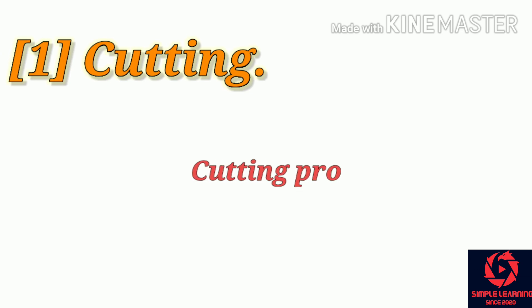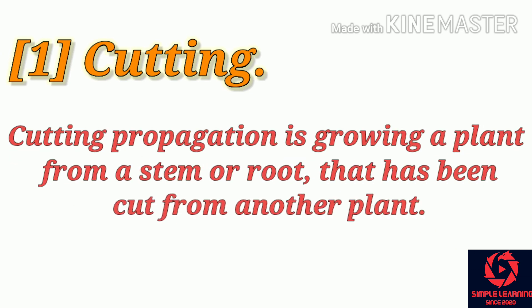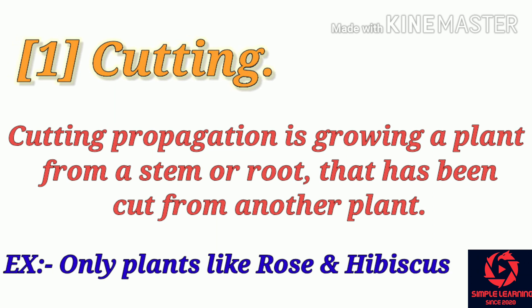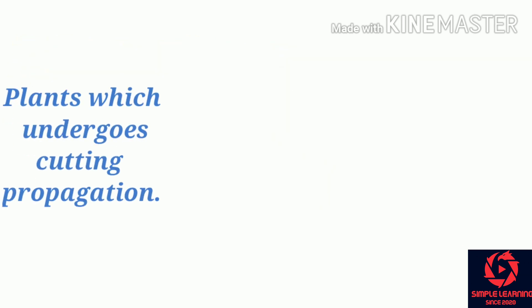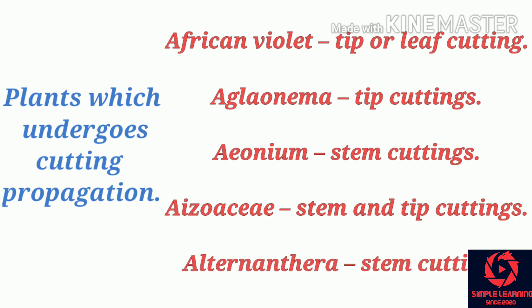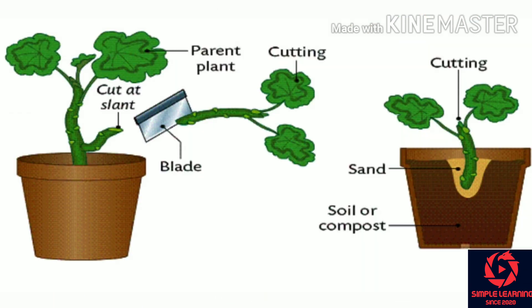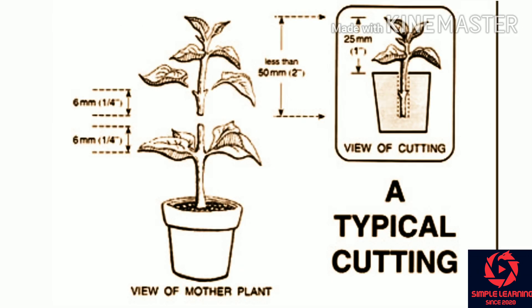Cutting gives higher yielding. Cutting propagation is growing a plant from a stem or root that has been cut from another plant. It is suitable for plants like rose and hibiscus, which undergo cutting propagation as shown on the side of the screen. If you see a parent plant and cut a stem stock from it, that stem stock should be properly moisturized and it gives better yielding.